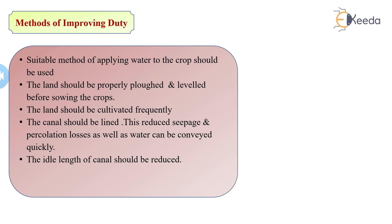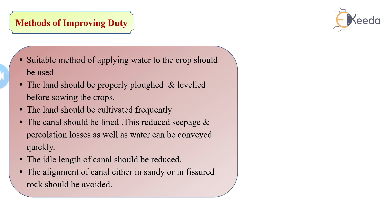The ideal length of the canal should be reduced. If the canal length is too long, conveyance losses occur while transporting water from one place to another, so we should maintain an optimal canal length. Also, alignment of the canal in sandy or fissured rock should be avoided. In permeable sandy soil, wastage of water is high and duty will be less, so such alignments must be avoided.